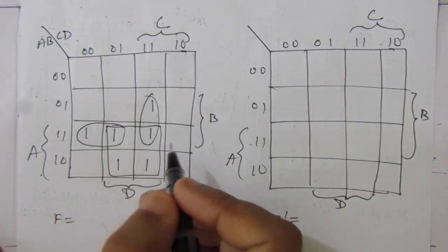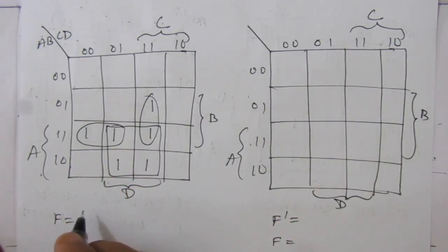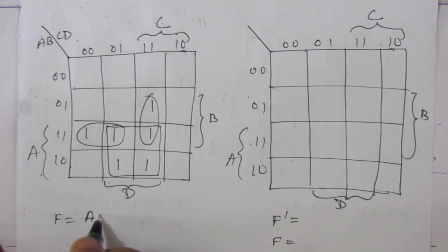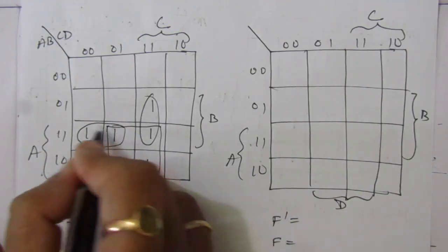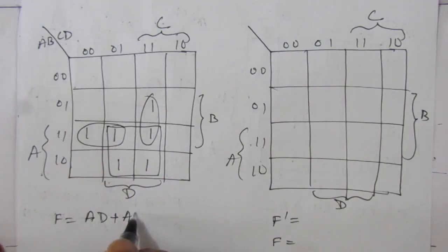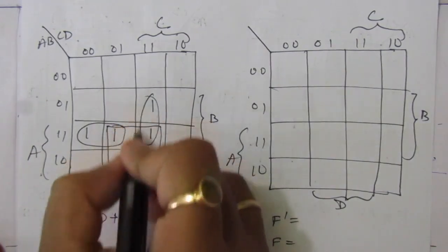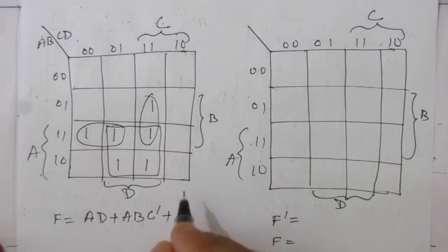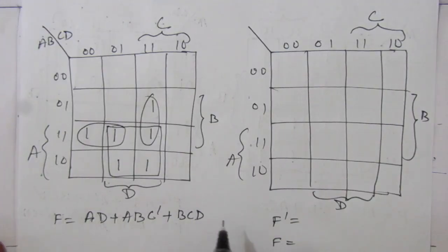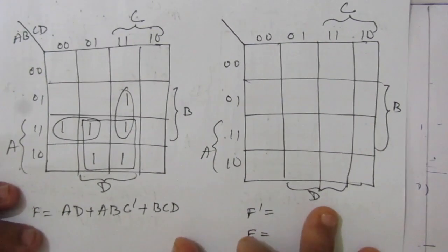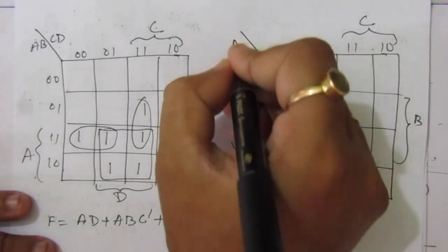We can combine the groups: this will be the first term, this will be the second term, and this will be the third term. From this four-variable K-map we write the simplified SOP expression: from the first grouping we get a d, from the second grouping we get a b c-bar, and from the third grouping we get b c d. So the simplified sum of product expression is a d + a b c-bar + b c d.